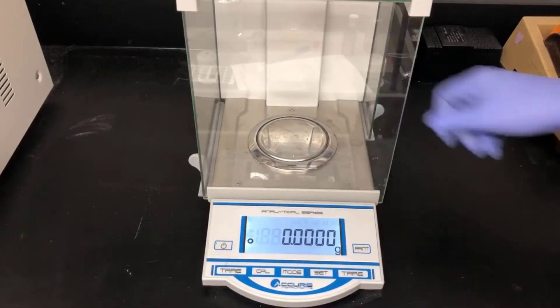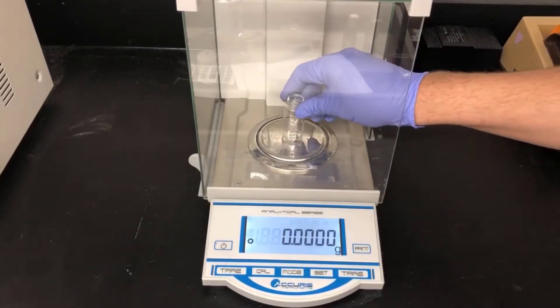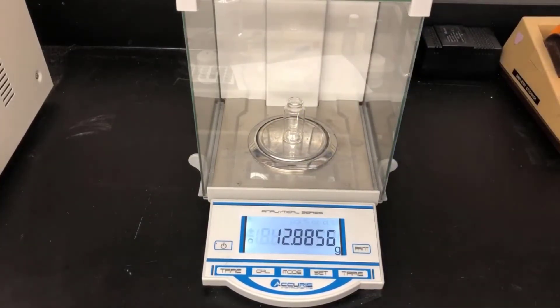Next, I'm getting a clean dry vial, and I'm going to determine its mass on the balance. This will enable me to determine the mass of the citrus oil by difference in the next step.